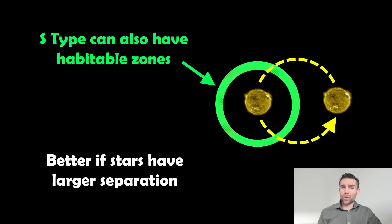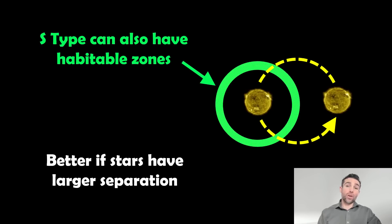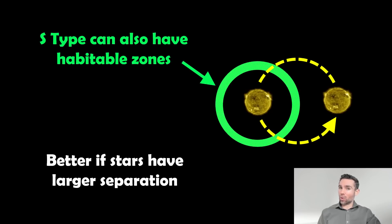S-type orbits can also have a habitable zone, but it only works if there's a fairly large separation between the two stars. Otherwise you get enormous fluctuations in the energy reaching the planet — as those two stars move around and the planet passes between them, you get a massive change in temperature. So it's better if the two stars are quite far apart. But they can still have a habitable zone, though in reality it would be quite elongated and asymmetric because of the way the stars move.